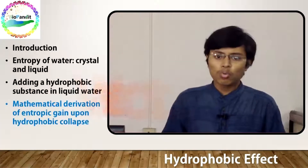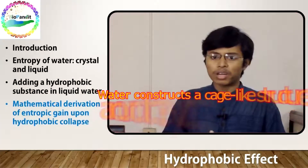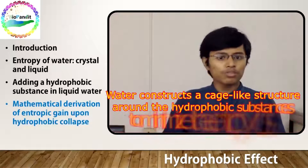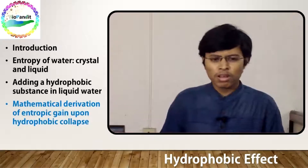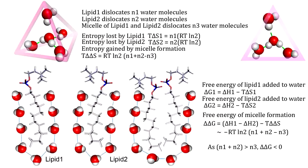In these cases, water constructs a cage-like structure around the hydrophobic substances to minimize the entropy loss. Now think about two such hydrophobes — say lipids in water — displacing N1 and N2 number of water molecules respectively. The entropy loss by adding lipid 1 in water is N1 × RT ln2, and that for lipid 2 is N2 × RT ln2.